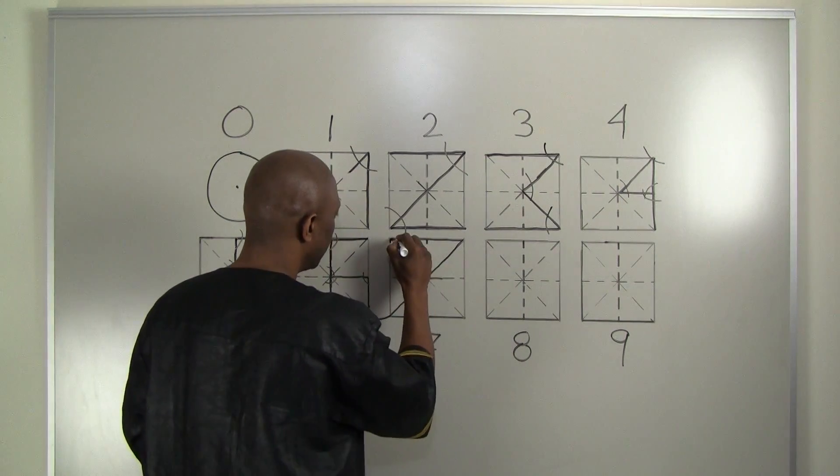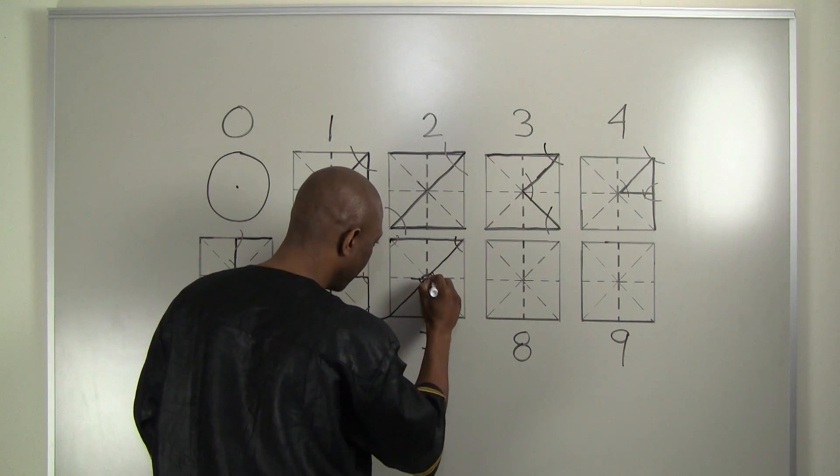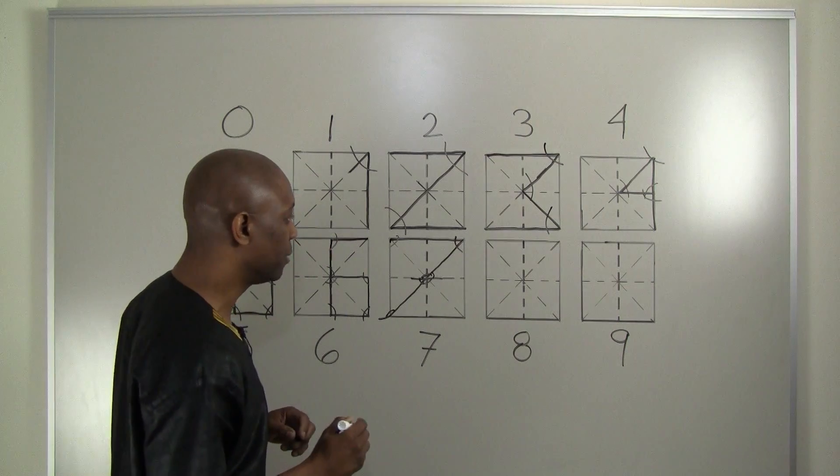7 because it has one, two, three, four, five, six, and seven angles.